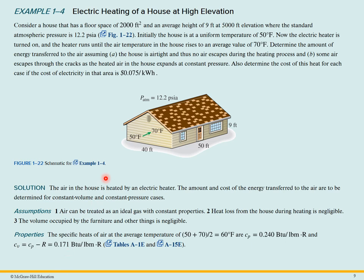So final problem for this lecture, we have a house that has a floor space of 2,000 square feet. An average height of nine feet. It's at 5,000 feet elevation with a pressure of 12.2 PSIA. The house is at a uniform temperature at 50 degrees Fahrenheit. And now we turn the electric heater on, and it runs until the air temperature rises to 70 degrees Fahrenheit. We want to determine the amount of energy transferred to the air, assuming the house is airtight, and thus no air escapes during the heating process.